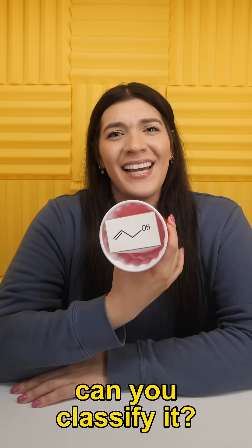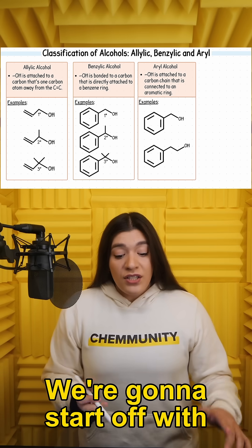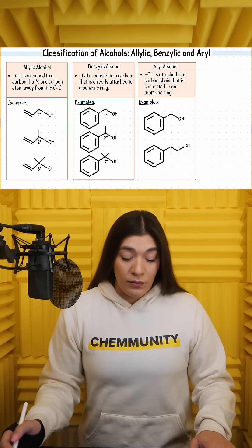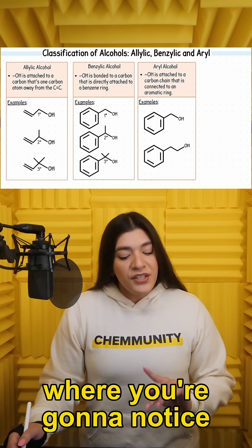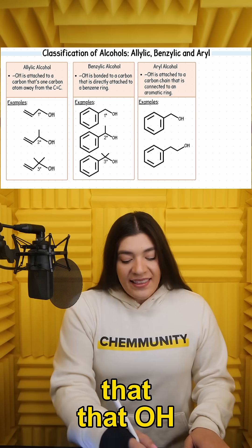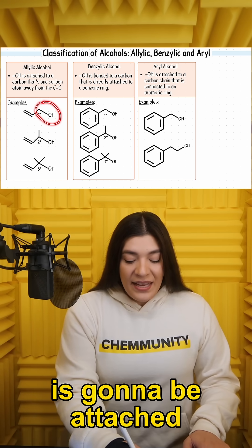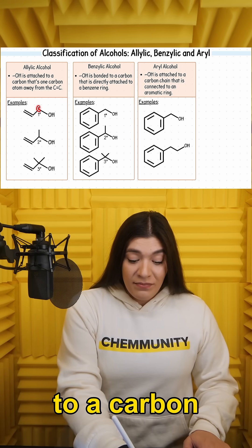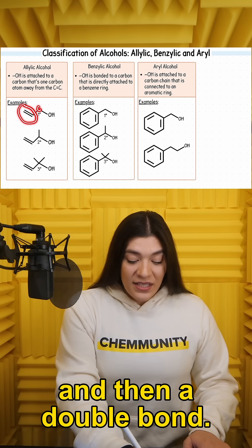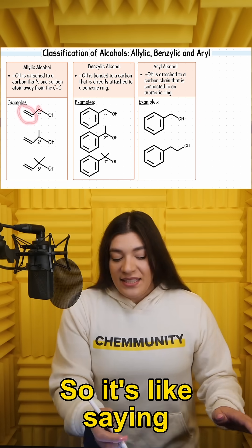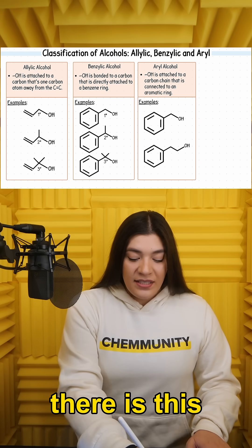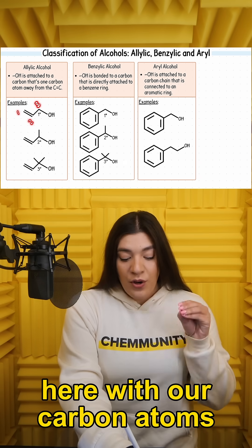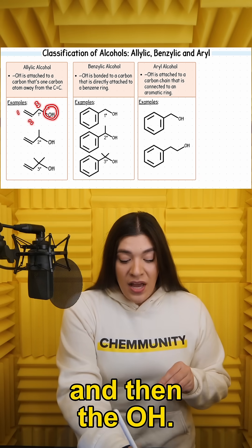Before you drink it, can you classify it? We're going to start off with something that is known as an allylic alcohol. You're going to notice that that OH is going to be attached to a carbon and then a double bond. So it's like saying there is this one to two to three relationship here with our carbon atoms and then the OH.